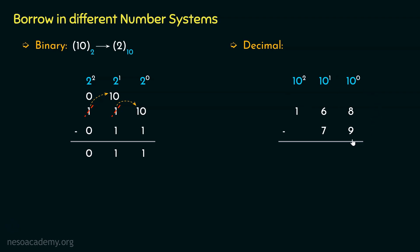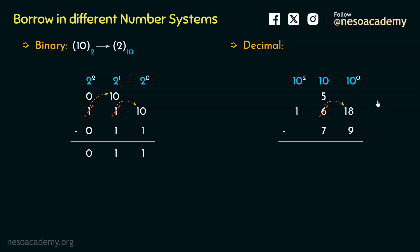Considering the units place, the minuend digit is 8 and the subtrahend digit is 9 — the minuend is lesser than the subtrahend, so we need to borrow. We borrow from the tens place digit. If we borrow 1 from there, in the tens place we will be left with 5. But did we borrow 1? Not really. From 60, we borrowed 10, so it became 50. Now from 18, if we subtract 9, we get the difference 9.